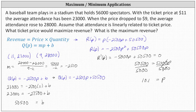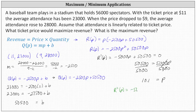We should recognize R of P as a quadratic function where the leading coefficient is negative, and therefore it is concave down. To verify using the second derivative test, we determine R double prime of P, which is the derivative of negative 5,000P plus 50,500, which is negative 5,000. For every value of P, the second derivative is negative, indicating the function is always concave down, and therefore we have maximum revenue at the critical number P equals 10.1.